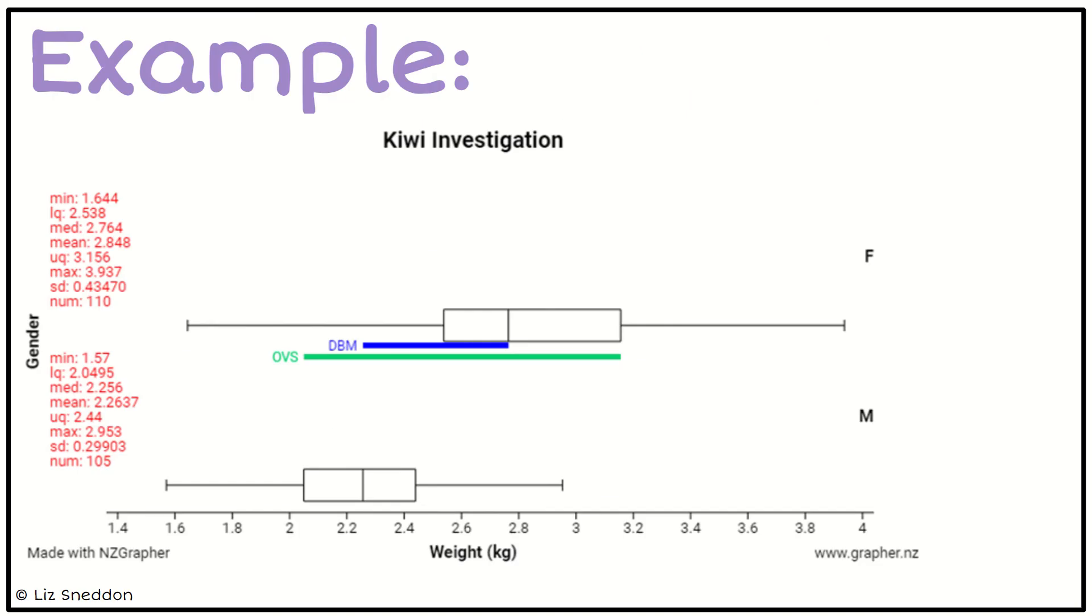Here's an example from our Kiwi investigation. The graph has already been drawn with the DBM and OVS on it. What I'm doing is making four copies of that so there are five different DBMs that are exactly the same size, and we're comparing that to the OVS. In this case, we can say yes, there is enough evidence that one group tends to be bigger than the other group.